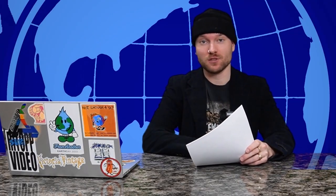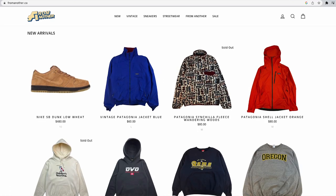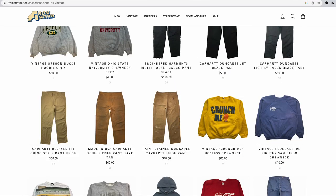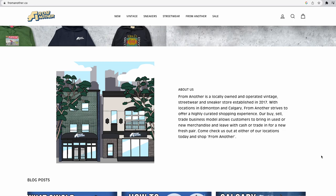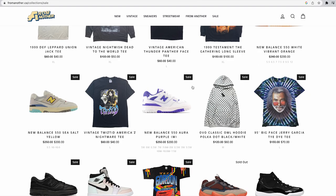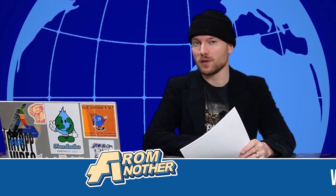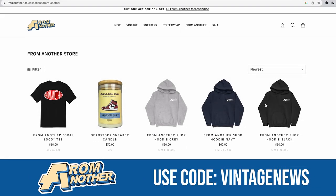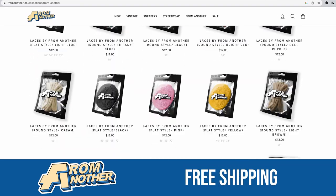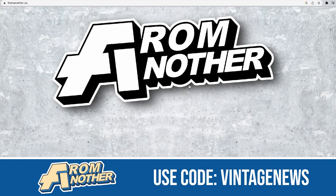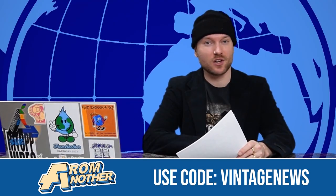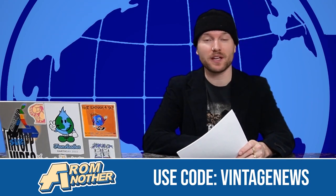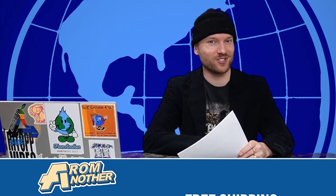Today's episode is brought to you by From Another. From Another is Alberta's premier spot for buying vintage, sneakers, and streetwear, both in-store and online at fromanother.ca. If you're looking to expand your wardrobe but don't want to break the bank, From Another has an extensive collection of new and used items. From Another also ships worldwide express, so if you're impatient like me, you can get your order right away. Use code VINTAGENEWS at checkout for free shipping.